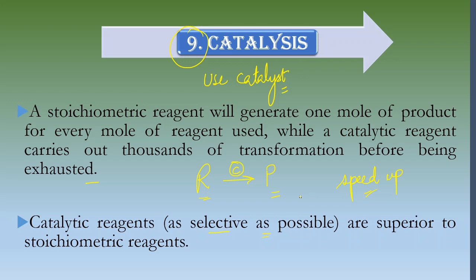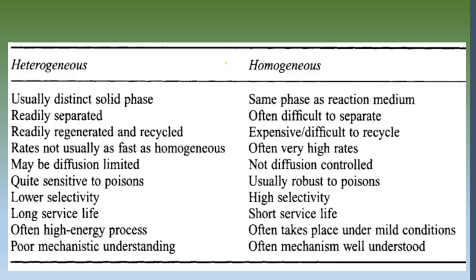Principle 9 says that if at all possible, try to use a catalyst. Since catalysts have very good selectivity, they transform your reactant easily and give you the product in a better yield. The catalyst itself does not get exhausted — you can recover it at the end — so your overall reaction will speed up and your product will be more efficiently obtained.